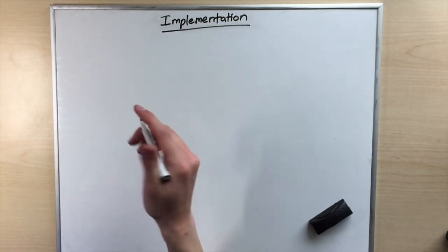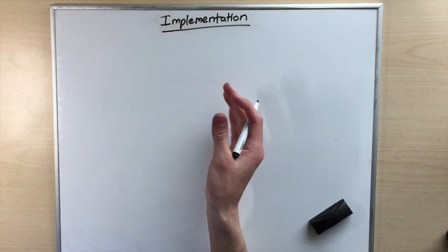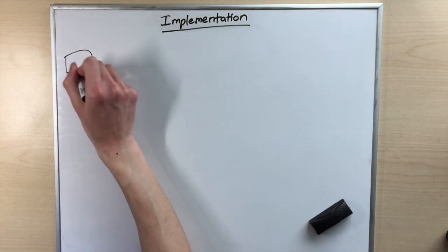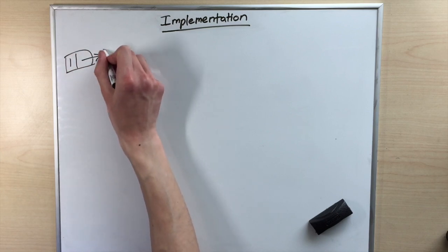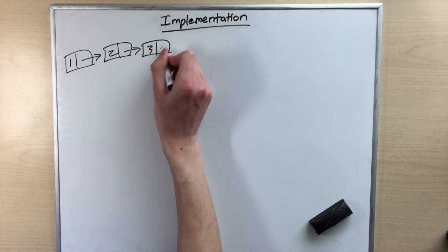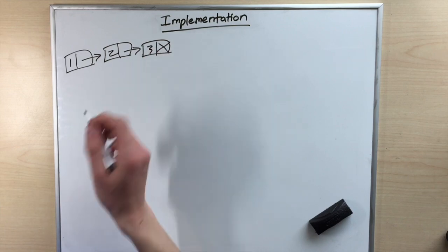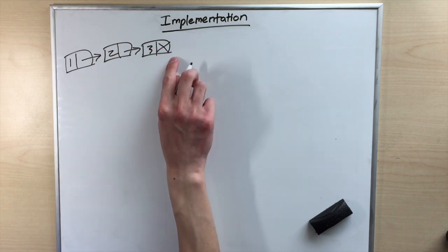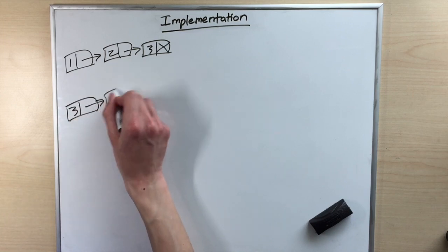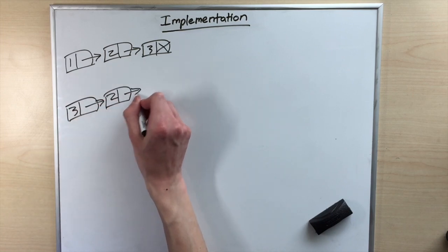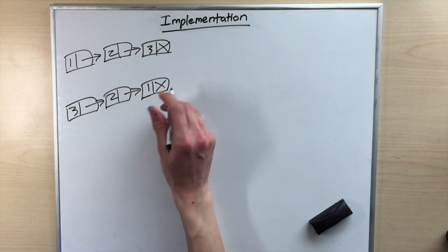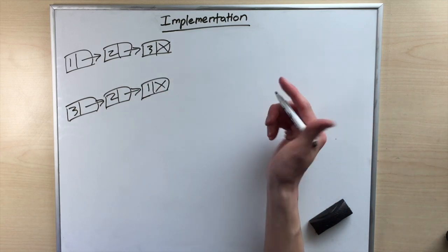Let's think of an example that isn't too hard, isn't too easy: three nodes. A linked list with the first node containing 1 pointing to node containing 2 — you know this story. After we reverse this linked list, we want it to look like node containing 3 pointing to node containing 2, which finally points to node containing 1. Before we start, there are two things we have to remember.